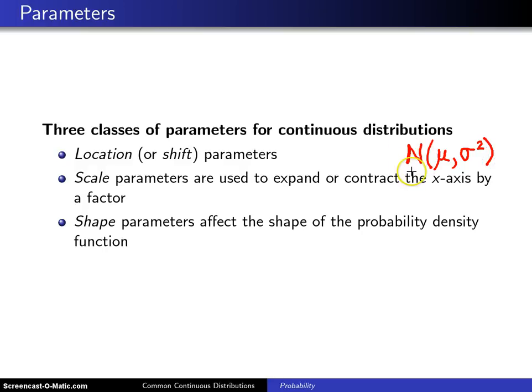This says a random variable is normally distributed with a mean, population mean μ, and a population variance σ². Well, it turns out that the parameter μ in that normal distribution is a location or a shift parameter.